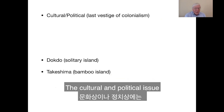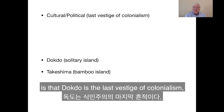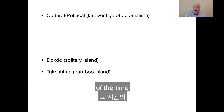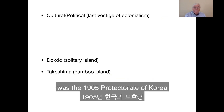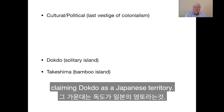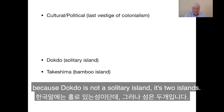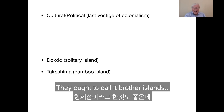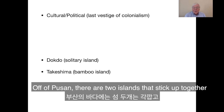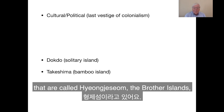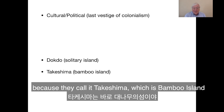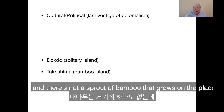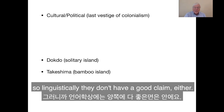The cultural and political issue is that Dokdo is the last vestige of colonialism — the time when Japan took over Korea from 1910 to 1945. The first step of this was the 1905 protectorate of Korea, claiming Dokdo as Japanese territory. Linguistically, neither claim is very good: Dokdo means solitary island but it's two islands, so it ought to be called something like Hyeongjia-sung — the brother islands. The Japanese claim is not very good either, because Takashima means bamboo island, and there's not a sprout of bamboo that grows on the place.